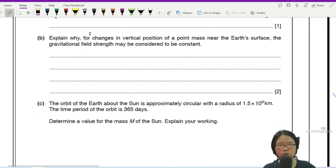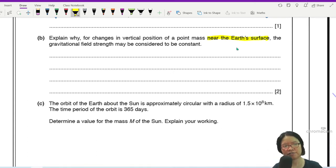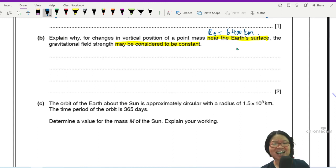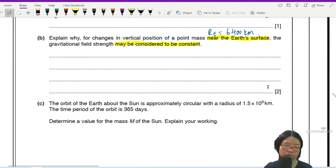Part B. Explain why for changes in vertical positions of a point mass near the Earth's surface, the gravitational field strength may be considered to be constant. When it's near to the Earth's surface, don't forget the Earth's radius is really big. Because I'm going to write down here, radius of Earth is 6400 km. So if you're 12 km above the Earth's surface, it's nothing. Cruising altitude for commercial flights are around 8 km above the ground. Also nothing.